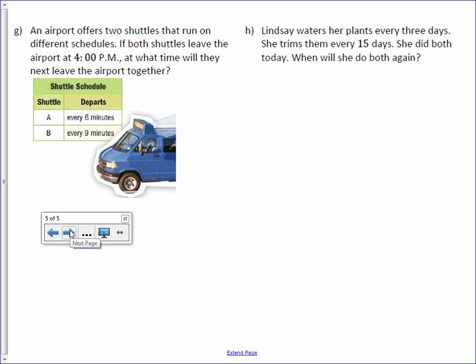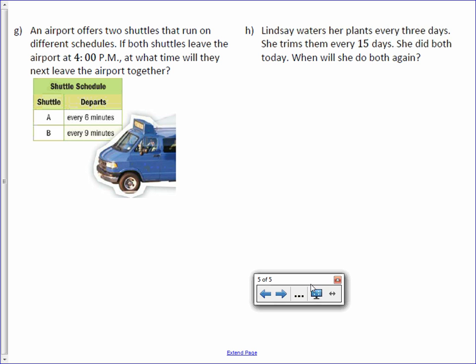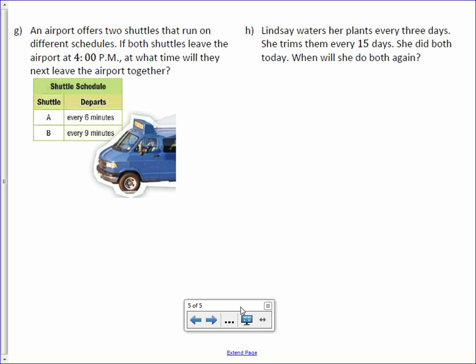Letter G, an airport offers two shuttles that run on different schedules. If both shuttles leave the airport at 4:00 p.m., at what time will they next leave the airport together? Shuttle A leaves every 6 minutes, and shuttle B leaves every 9 minutes. 6 is the product of 2 and 3, and 9 is the product of 3 and 3. They both have a 3 in common, and nothing else. So our leftovers are 2 and 3.